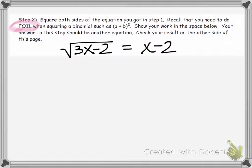Recall that we will need to do FOIL on the right side of the equation, because we will also be squaring a binomial on the right side.